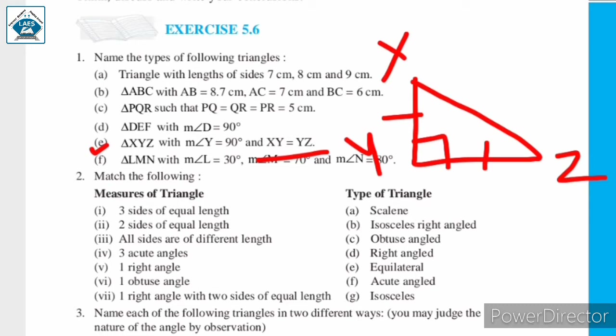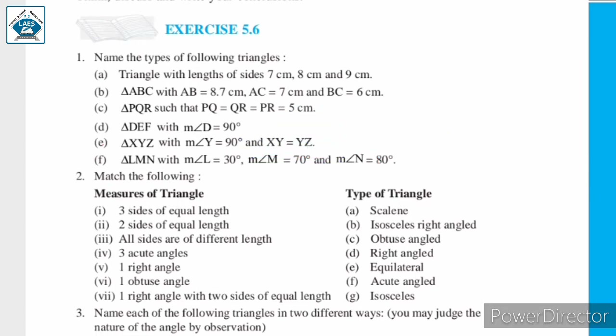Two sides of this triangle are equal — it is given that XY equals YZ. Therefore, triangle XYZ is an isosceles right angled triangle.